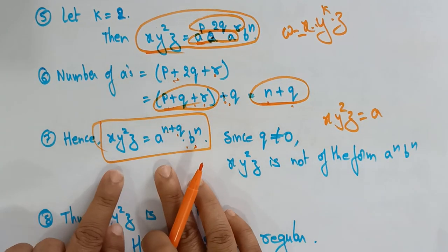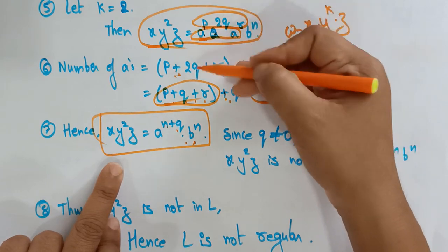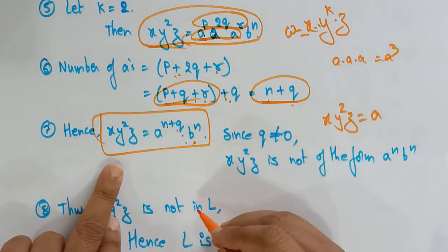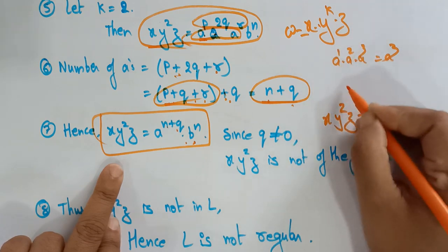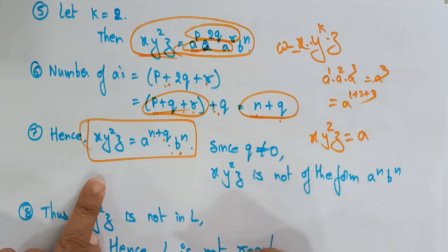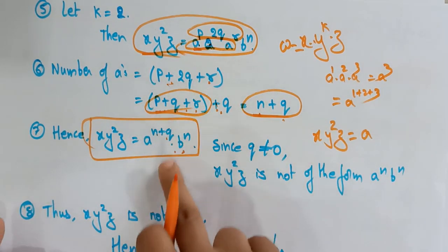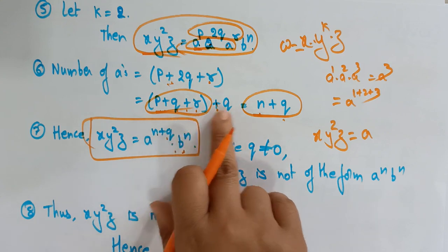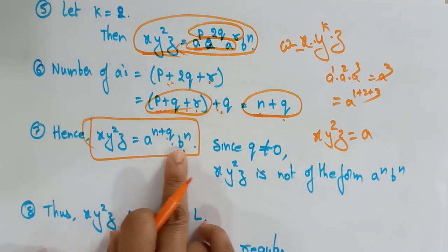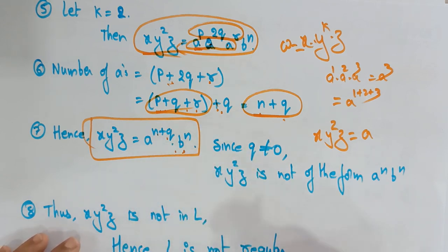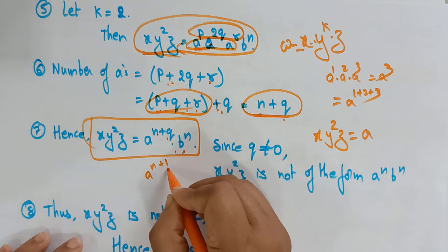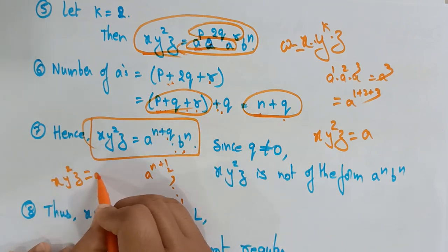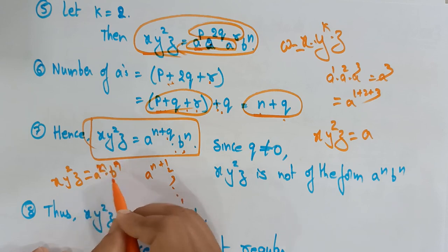So previously we had the full equation and I reduce it: since three A terms combine — A · A · A = A³ — we apply the same formula here, P + 2Q + R becomes P + Q + R plus Q, which equals N + Q. Since Q ≠ 0, Q will be something like 1, 2, or 3. If Q were 0, we'd get aᴺbᴺ, which is in the language — but Q is not equal to 0.